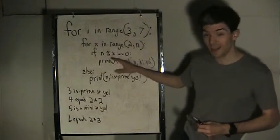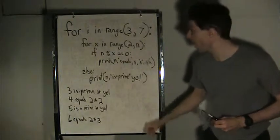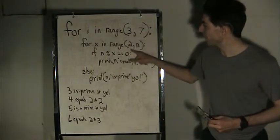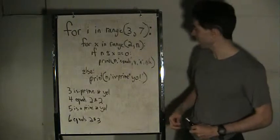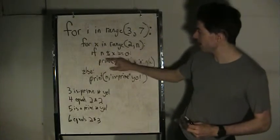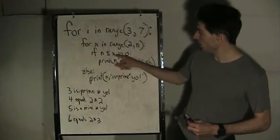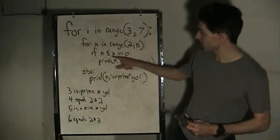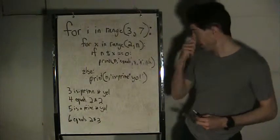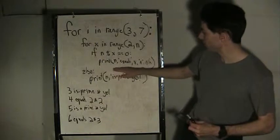Now, if n modulus x equals zero—it's a mod operator—then print what it's divided by. So basically this is the checker to see if it's a prime number or not.